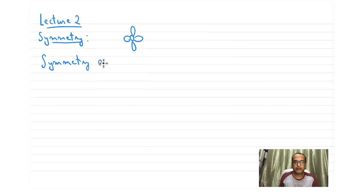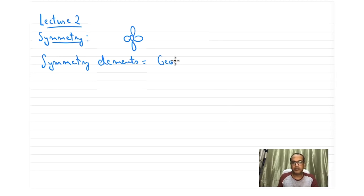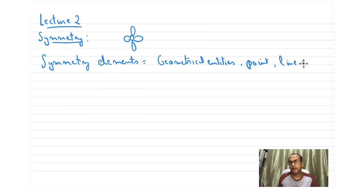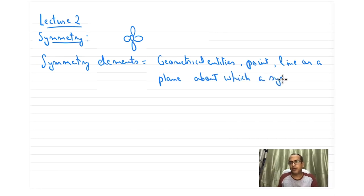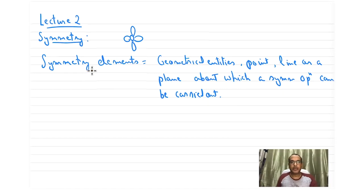Symmetry elements are geometrical entities — like a point, a line, or a plane — about which a symmetry operation can be carried out. You can see that while defining symmetry elements, we also have to invoke the term 'symmetry operation.' You cannot define a symmetry element without a symmetry operation.